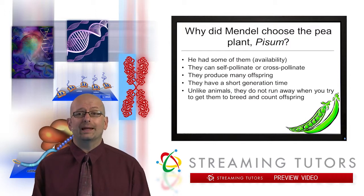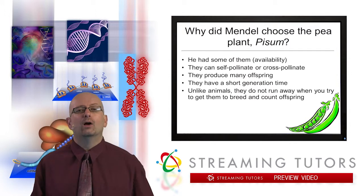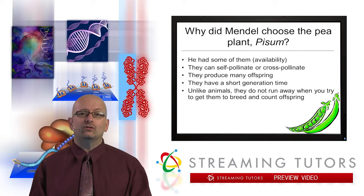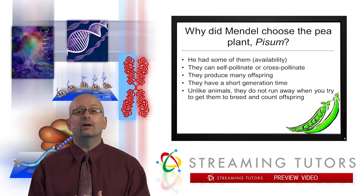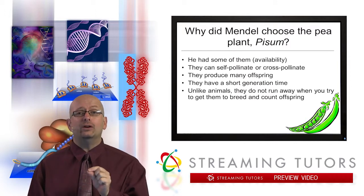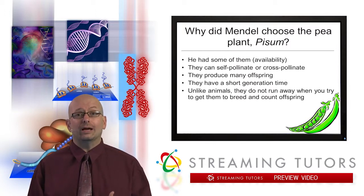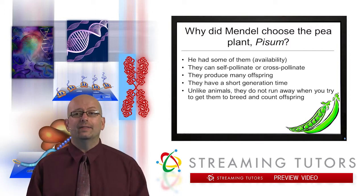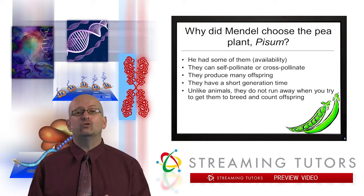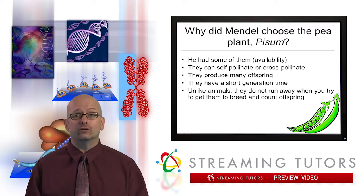Very importantly, peas — like most other plants — can either self-pollinate or cross-pollinate. Unlike humans and many animals, most plants have both male and female sexual organs in the same flower. So you can take pollen from a plant and put it right onto the receptor for the egg of the same plant — essentially the equivalent of self-fertilization from a genetic perspective. Obviously humans can't do that, but pea plants can. Alternatively, you can cross-pollinate them, where pollen from one plant fertilizes the eggs of another. Both self and cross-pollination are very important to the experimental design Mendel came up with.